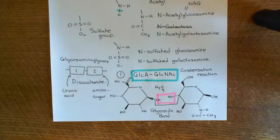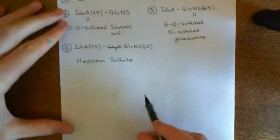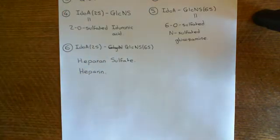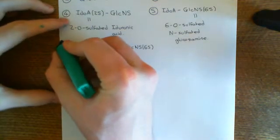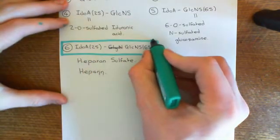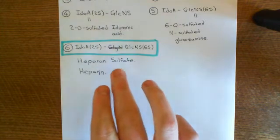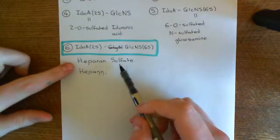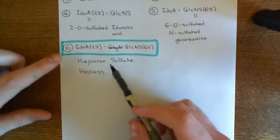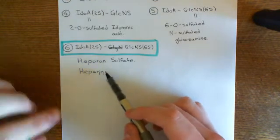The other glycosaminoglycan, heparin, is also a glycosaminoglycan. However, the major disaccharide used in heparin is 2-O-sulfated iduronic acid with 6-O-sulfated N-sulfated glucosamine. So heparin and heparan sulfate are both similar in structure, but different disaccharides make them up — their favourite disaccharide is different, and that's how these two molecules differ.